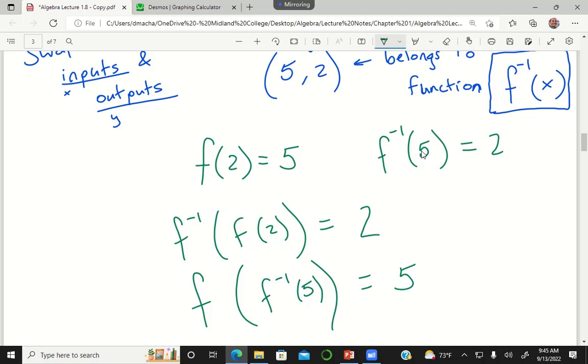So whenever you compose a function with its inverse, you're always just going to get out what you put in. When you compose a function with its inverse, you're mapping that number to whatever number would be in the output, but then you're doing exactly the reverse operation - you're taking the inverse, so you're mapping that number back to what you started with.